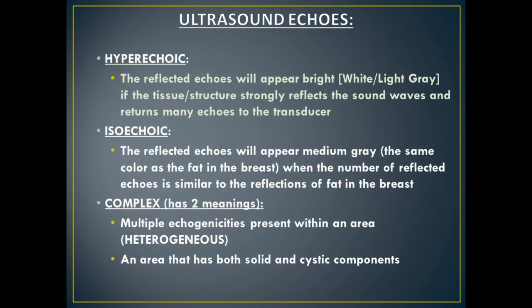Hyperechoic is exactly the opposite of hypoechoic. This means that the structure really strongly reflected the sound wave and is returning a really strong reflection or echo back to the transducer. These structures appear white or really light gray on ultrasound. Then we have something called isoechoic. In ultrasound, how we determine the brightness of an area in the breast, we compare it to the color of the fat in the breast.